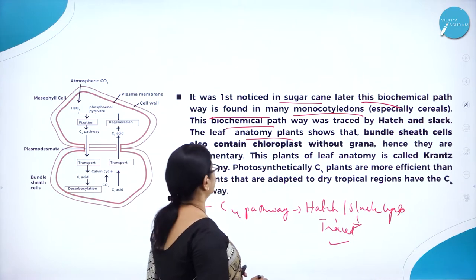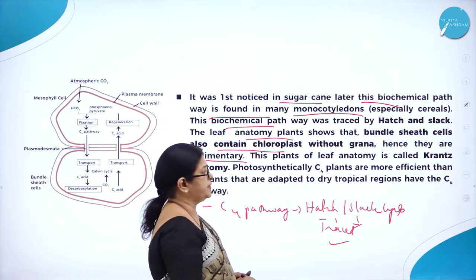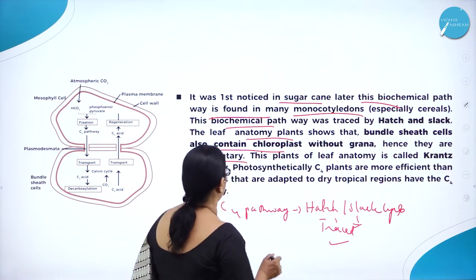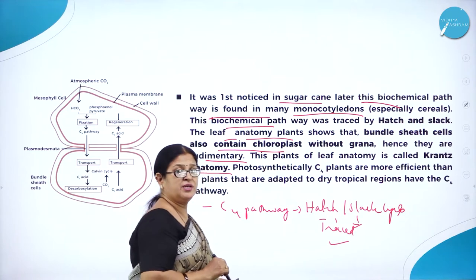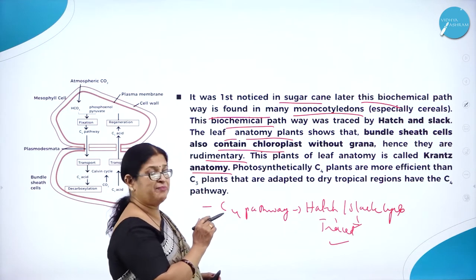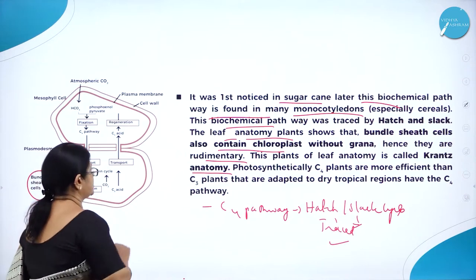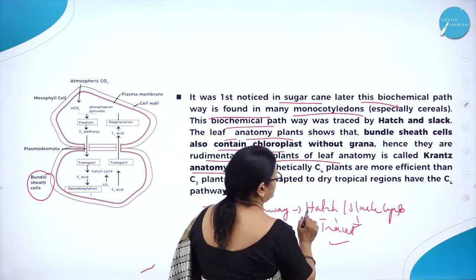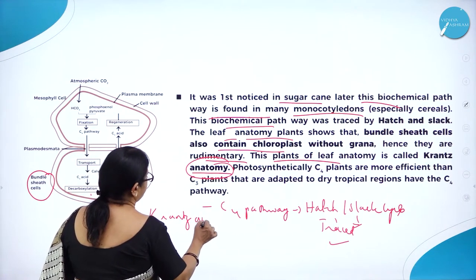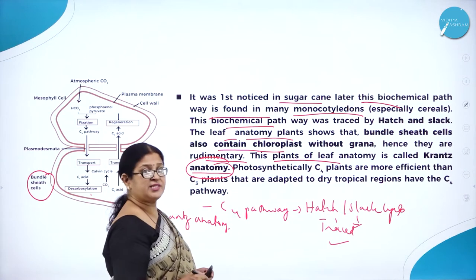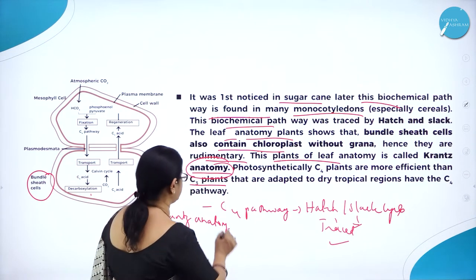The leaf anatomy of C4 plants shows that bundle sheet cells also contain chloroplasts without grana — hence they are rudimentary. This plant leaf anatomy is called Kranz anatomy. It was observed that the leaf anatomy is very unique in these C4 plants. Kranz anatomy is very important and is commonly asked in exams. Photosynthetically, C4 plants are more efficient than C3 plants.